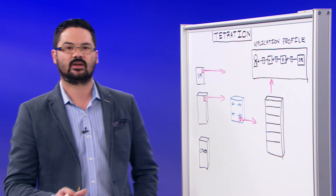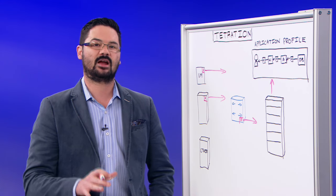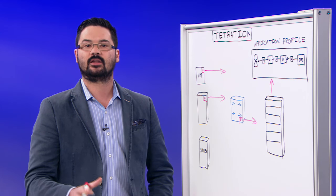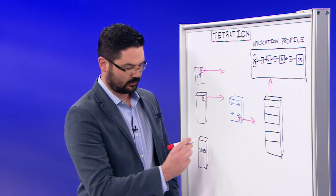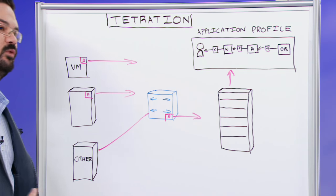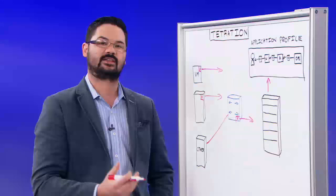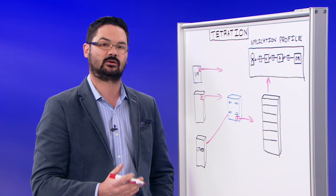The beauty of having two collection points is there are other things in our data center that may not be supportive of an agent, things like mainframes and Unix systems. So in that case, we can simply plug those other systems directly into a switch with an agent and still get visibility into the applications that are touching that particular device.